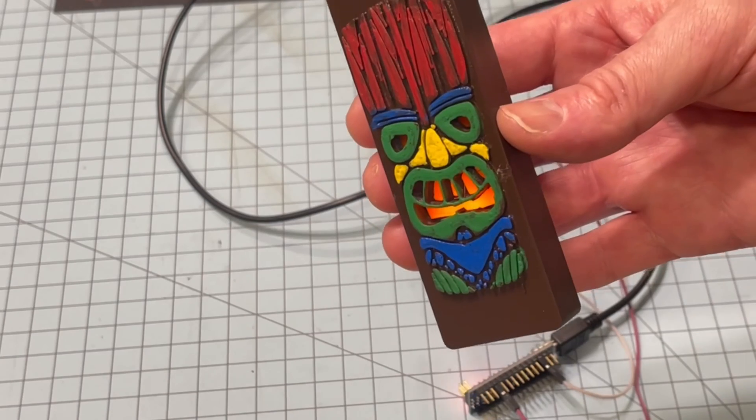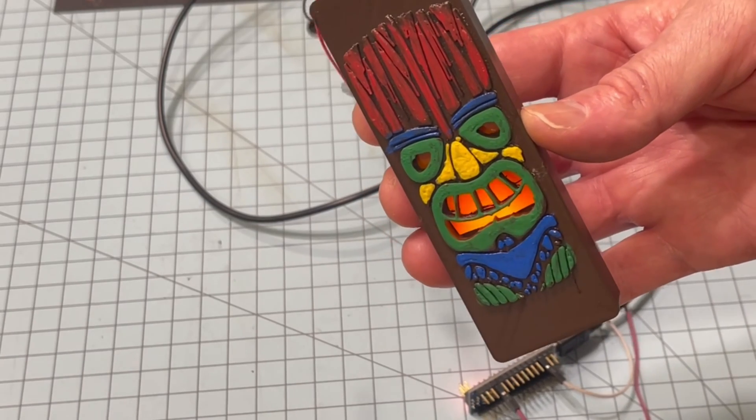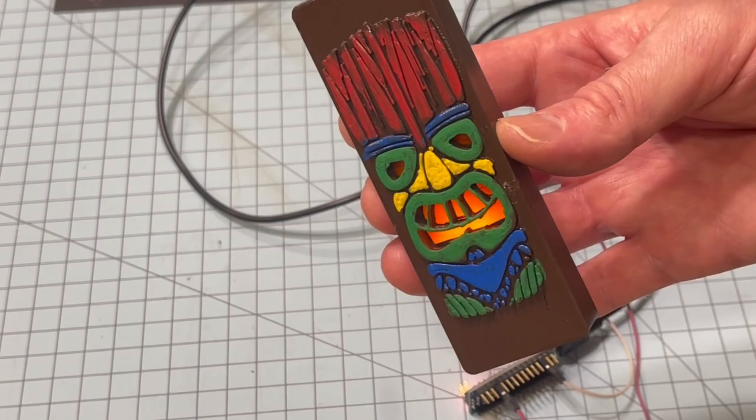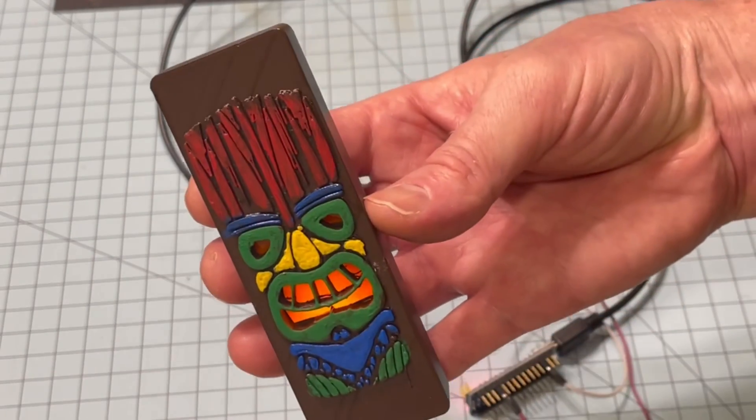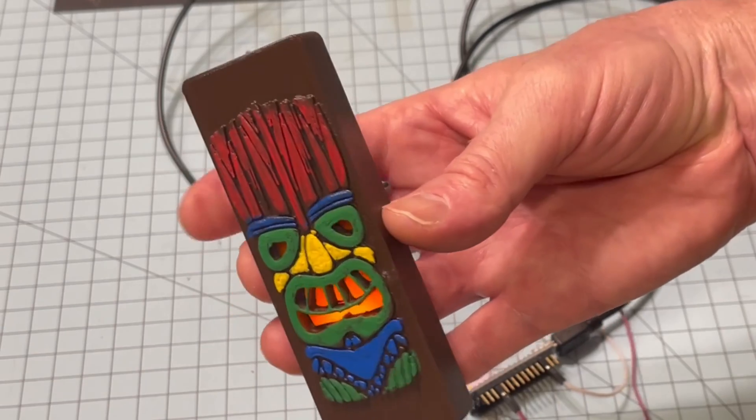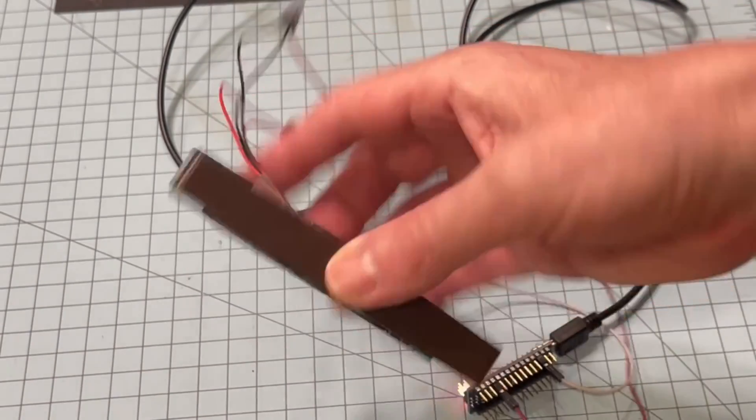And by reducing the delay in the sketch I showed previously, you can make it flicker even faster. Look at that. Now I'll even shut the lights off. And that brightness is also coming from two LEDs and the reflective tape that I have there.